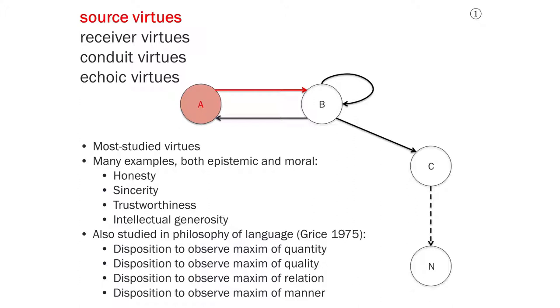Source virtues have also been studied in the philosophy of language, including by H. Paul Grice, who in a 1975 paper argued that there is a duty to be cooperative in a communicative exchange. When he talks about cooperation, he specifically is thinking about the cooperativeness of a speaker rather than the cooperativeness of a hearer. And he said that there are four main ways that someone can manifest this cooperativeness. He called these the maxims of quantity, quality, relation, and manner.